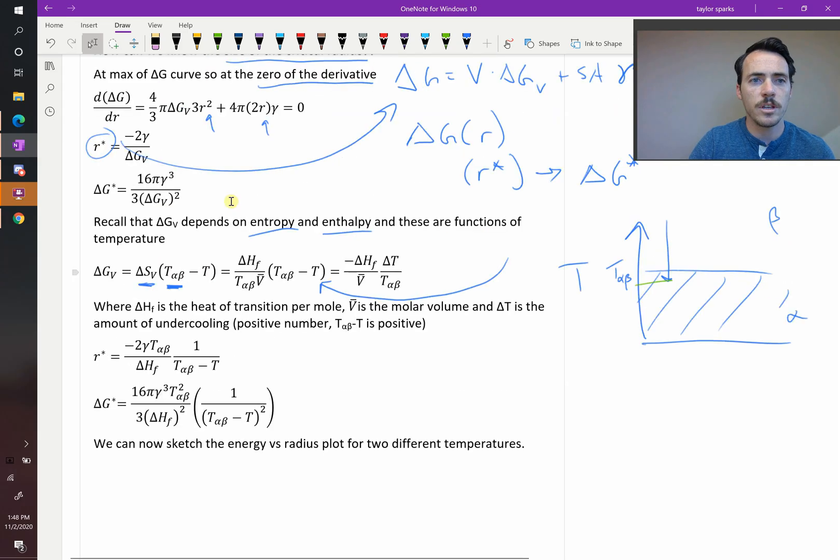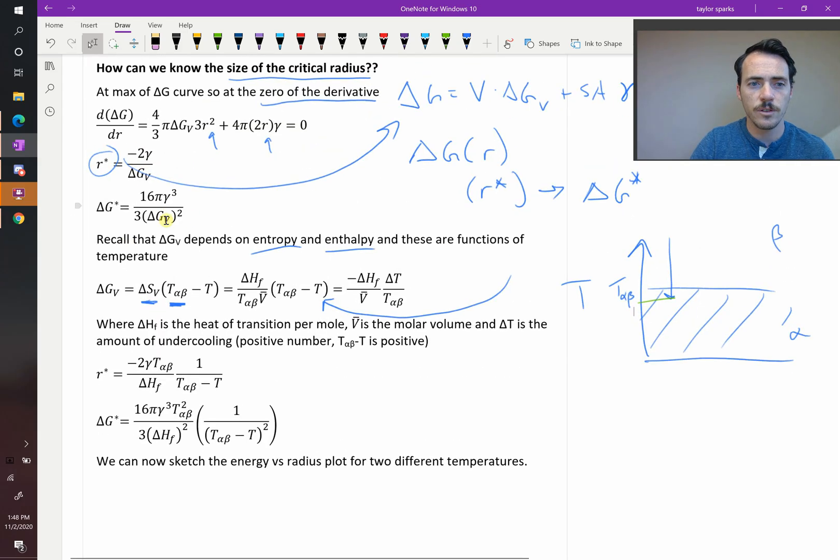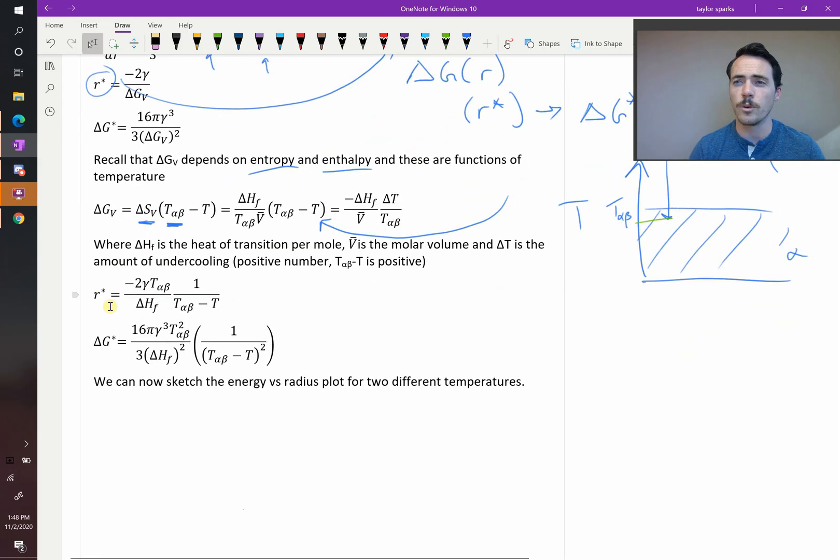So plugging these values into our previous expressions for delta G_V, we get expressions for R star and delta G star, all in terms of things that we might know about a material, like the heat of transition per mole, the thermodynamic temperature where you'd expect the transition to take place, and the surface energy.